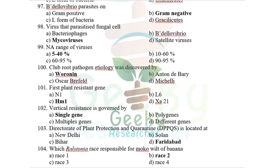Bdellovibrio parasitism: Bdellovibrio is a gram-negative bacterium that infects another gram-negative bacterium. It was first studied by Stolp. Options included gram-negative and grass liquids (also gram-negative) — I went with gram-negative.